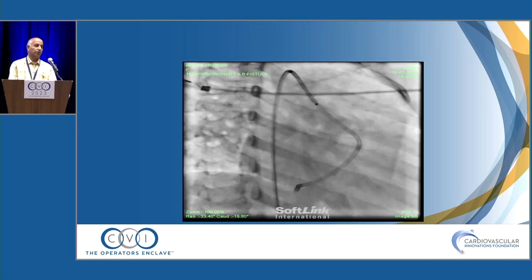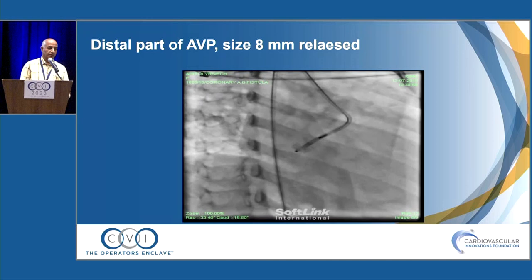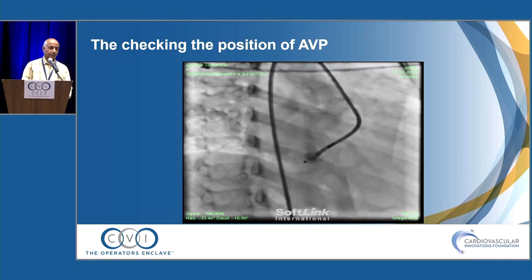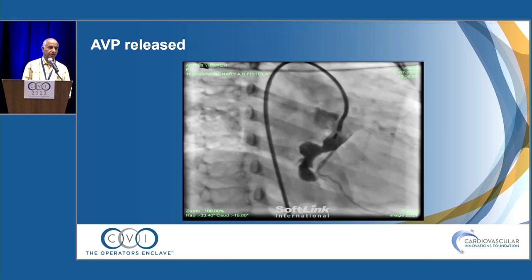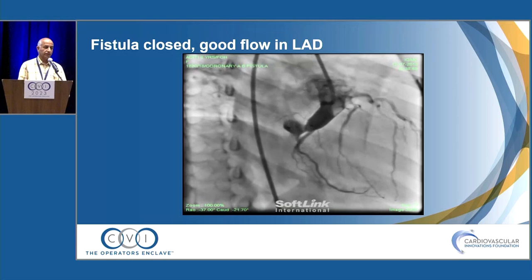On CT we had assessed the size of the fistula at 5.3 mm. We took an 8 mm AVP2 Amplatzer Vascular Plug. The distal part was released, confirmed in right place, and the vascular plug was deployed — fistula closed. Final result showed good flow into the LAD with a closed fistula and normal distal circumflex artery.